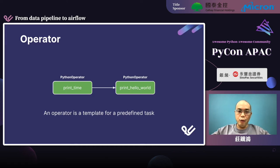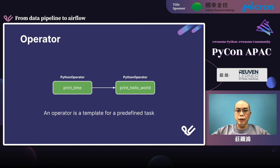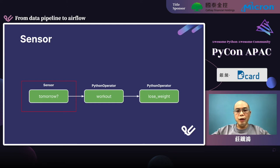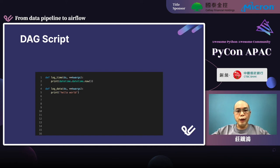An Airflow workflow — we call it a DAG — consists of many different operators. An operator is a template for a predefined task. For example, the Python operator is an operator whose role is to call a Python function. The Branch Python operator's function is to choose a directly downstream task to follow — when I am in the office, I can either map, surf, or code, but certainly not all of them at the same time. A sensor is a kind of special operator: a sensor blocks a workflow path until certain conditions are fulfilled.